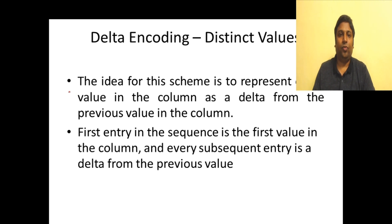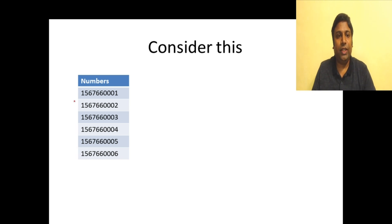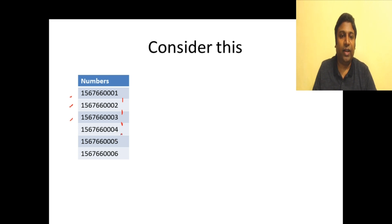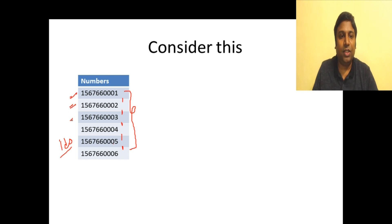The next encoding technique is delta encoding. Delta encoding is suitable for a column with many distinct values where each value differs from the previous value by a delta. Consider a column with large sequential values — for example, IDs — where the difference between consecutive values is one. Each value differs from the previous by a delta of one.